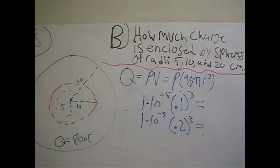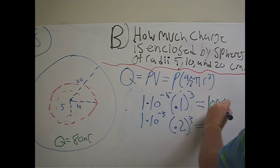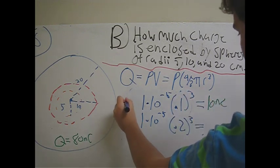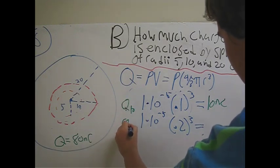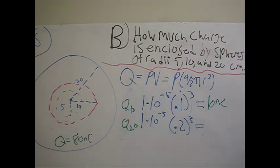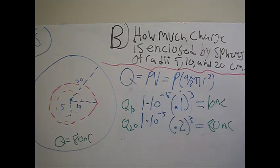Plug in 0.1 for the 10 centimeters and 0.2 for the 20 centimeters, which will give a value of 10 nanocoulombs for the charge at 10 centimeters, and a value of 80 nanocoulombs for the charge at 20 centimeters.